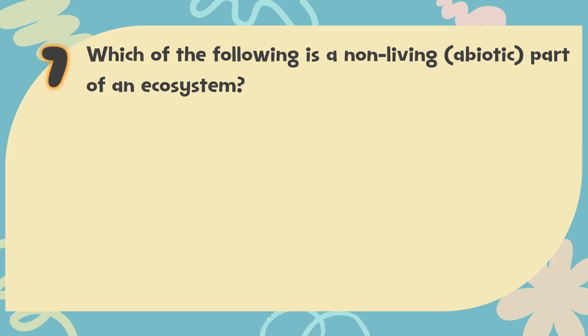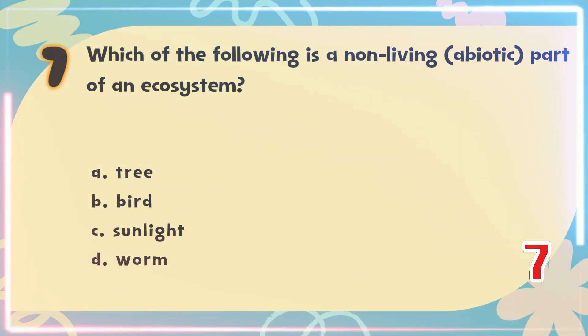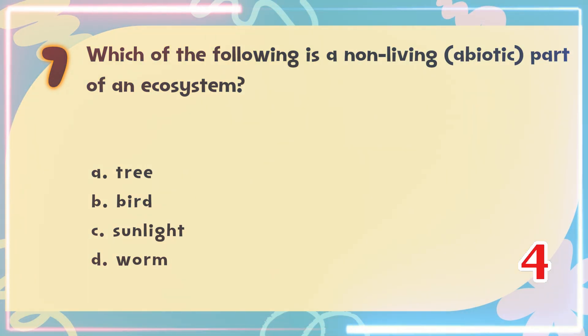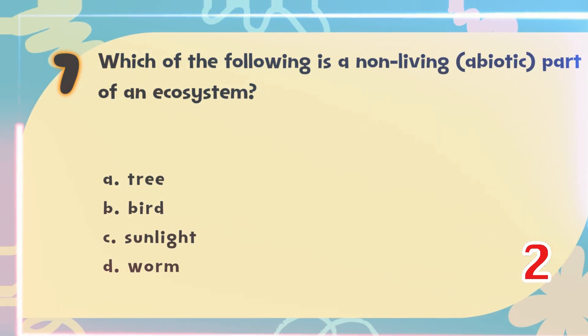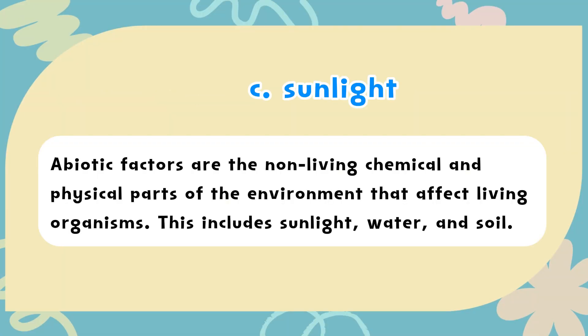Number 7. Which of the following is a non-living abiotic part of an ecosystem? The choices are: A. Tree, B. Bird, C. Sunlight, D. Worm. The correct answer is C. Sunlight. Abiotic factors are the non-living chemical and physical parts of the environment that affect living organisms — this includes sunlight, water and soil.